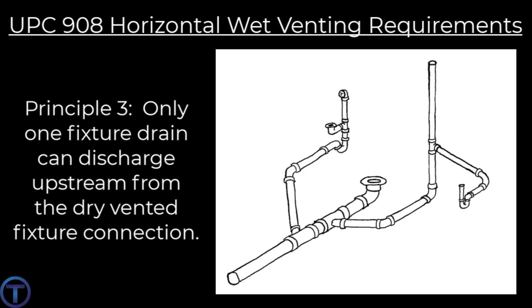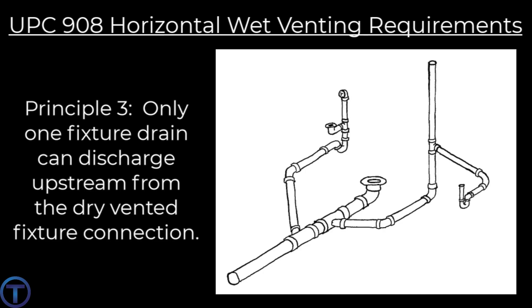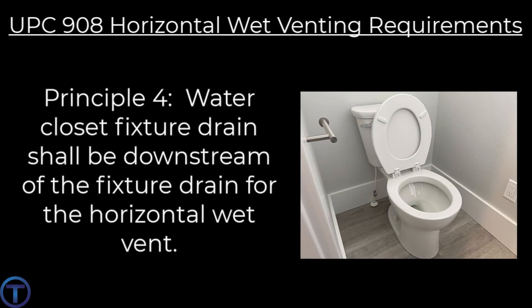Horizontal wet vent principle three: only one fixture drain can discharge upstream from the dry vent fixture connection. This is similar to what we see in the International Plumbing Code, just worded differently — basically every fixture has to have an individual connection to the wet vent. Horizontal wet vent principle four: the water closet fixture drain shall be downstream from the fixture drain for the horizontal wet vent, specifying that the toilet cannot be upstream — it can only be down past the lavatory.